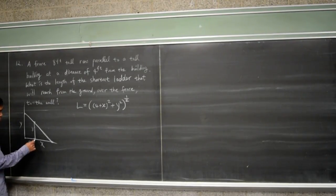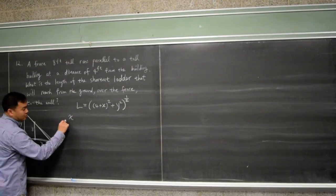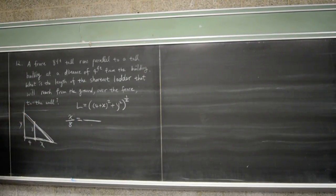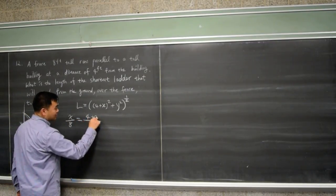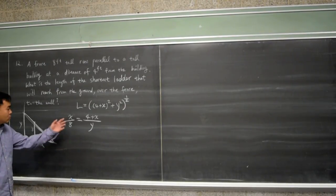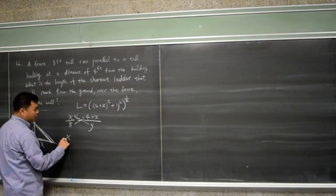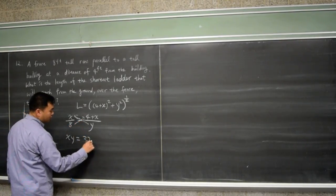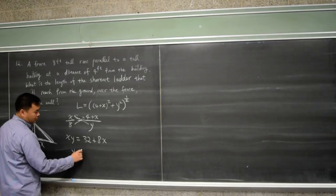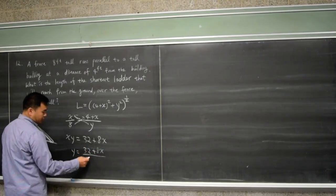In the small triangle, x is to 8 as the bigger triangle is similar to the smaller one. So the ratio gives us: x over 8 equals (4 + x) over y, and cross multiplying gives xy = 8 times 4 = 32, plus 8 times x is 8x. Then divide by x to get y = (32 + 8x) / x.